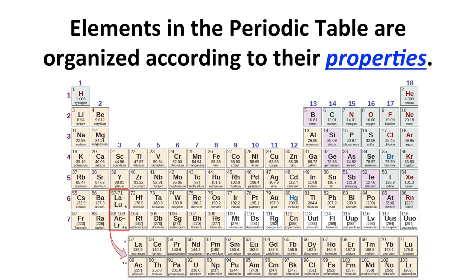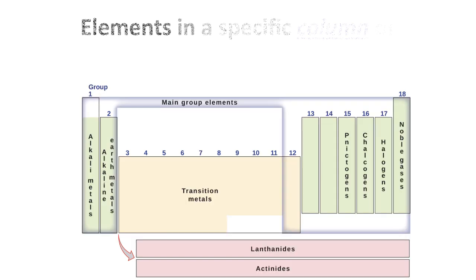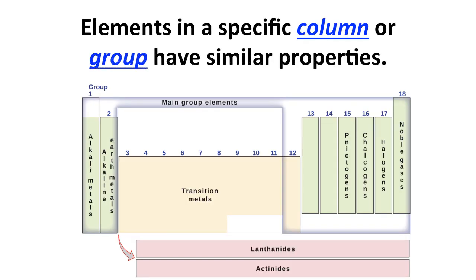The elements in the periodic table are organized according to their properties. Elements in a given column or group have similar properties. As an example, the alkaline metals, elements in column or group 1, lithium, sodium, potassium, etc., they all have similar chemical properties. The alkaline earth metals, column 2, all have properties similar to other elements in that column, same for all of the other columns or groups.